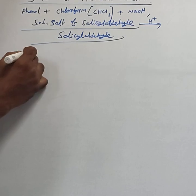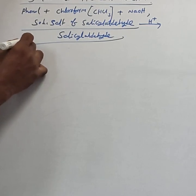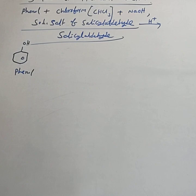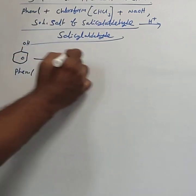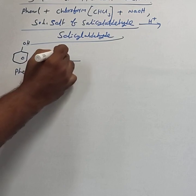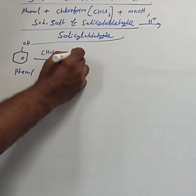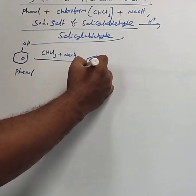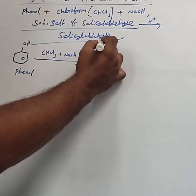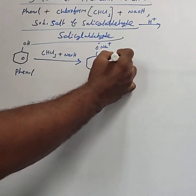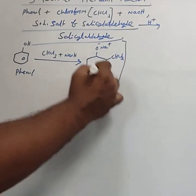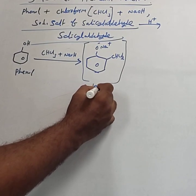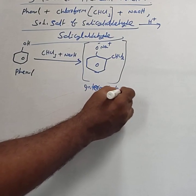Self-explanatory means: first write the reaction. Below the reactant, name the compound — phenol. When treated with chloroform (CHCl3) and NaOH, first a reactive intermediate is formed. The intermediate formula is O⁻Na⁺ with CHCl2. If you know this formula, write the intermediate; otherwise, there is no need to write it.